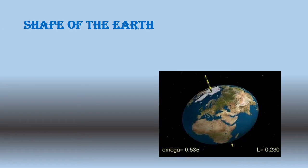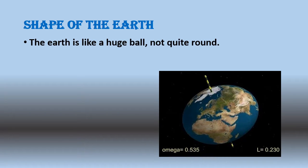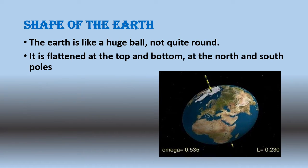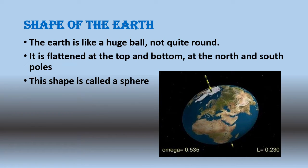So let's talk about the shape of the earth — how does earth look like? According to scientists and the research they have made, and pictures they have taken from space with the help of satellites, they have proposed that earth is like a huge ball, but not quite round. It is flattened at the top and the bottom at its north and south poles. This shape is called a sphere. Earth has a spherical shape.